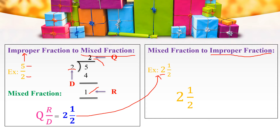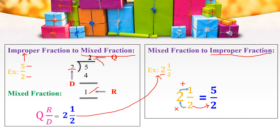To convert it, we need to multiply the denominator with the whole part. That is, 2 twos are 4. Keep 4 in your mind and add it with the numerator. So, 4 plus 1 equals 5. Therefore, we write 5 in the numerator and the denominator remains the same. Therefore, 5 by 2 is an Improper Fraction.